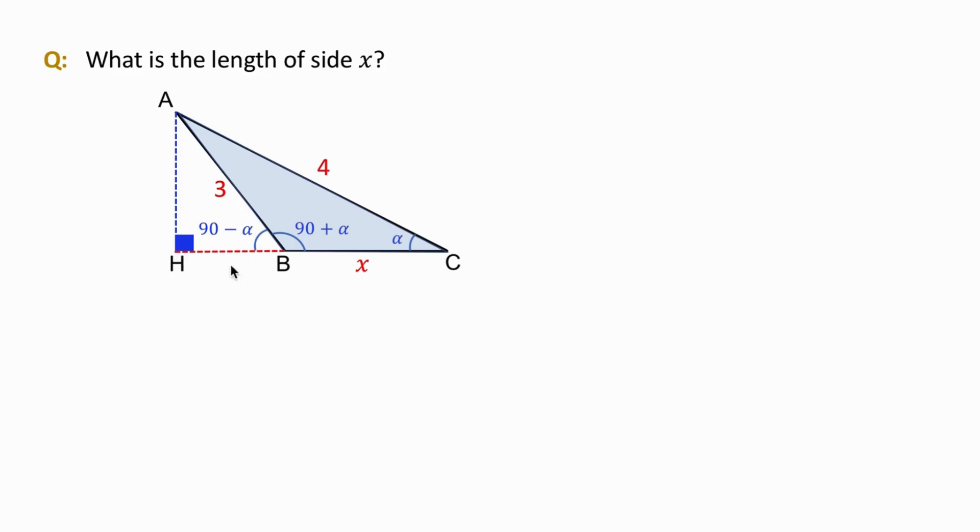We show the length HB by y. We label the image of point B with respect to AH as B'. So, the length of HB' is also y. Then, we connect B' to the vertex A. So, by the reflection rules, angle B' is also 90 minus alpha, which means the reflected side AB' has the same length as AB, which is 3.